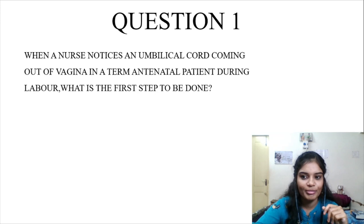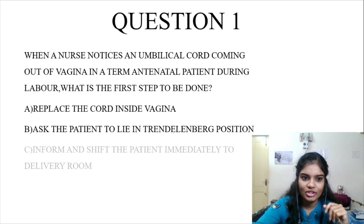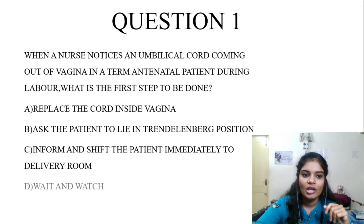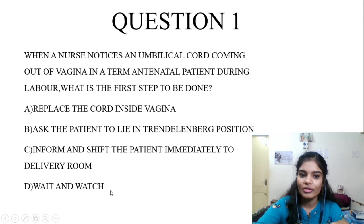Now we will see the options. Option A: replace the cord inside the vagina. Option B: ask the patient to lie in Trendelenburg position. Option C: inform and shift the patient immediately to the delivery room. Option D: wait and watch. The key point is what is the first step. With basic MBBS knowledge, we are very sure that when the umbilical cord is coming out, we won't wait and watch. So option D is excluded, and we are left with three options.